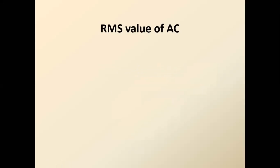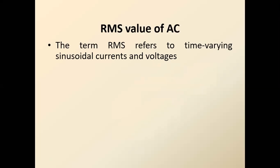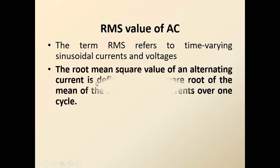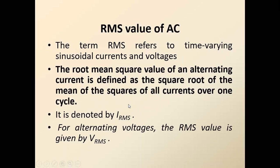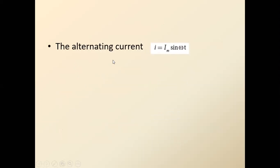The RMS value of AC means root mean square value of alternating current. The term RMS refers to time-varying sinusoidal currents and voltages — that is, current and voltage are changing with respect to time. The root mean square value of alternating current is defined as the square root of the mean of the squares of all the currents over one cycle. It is denoted by Irms, and the corresponding voltage is denoted by Vrms.